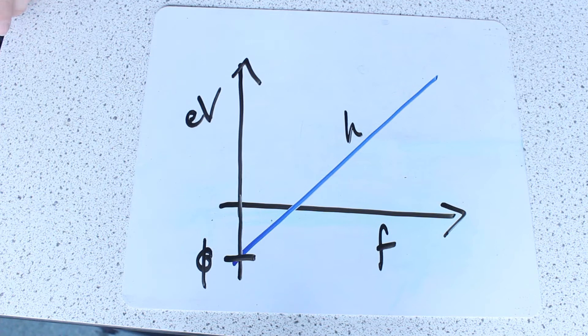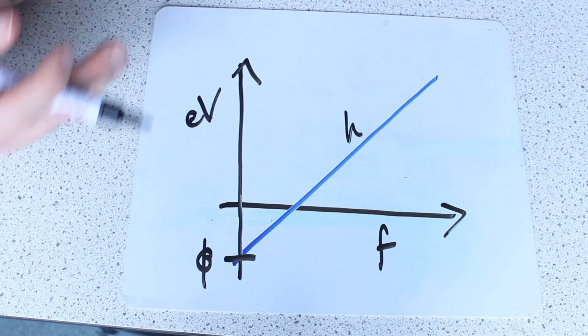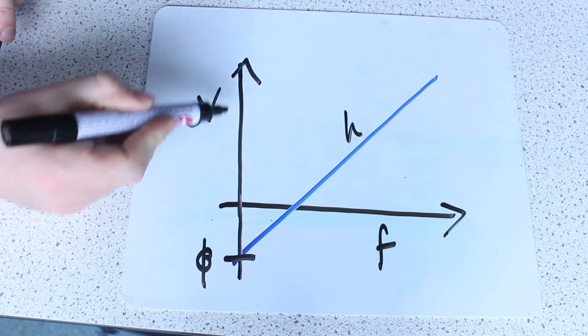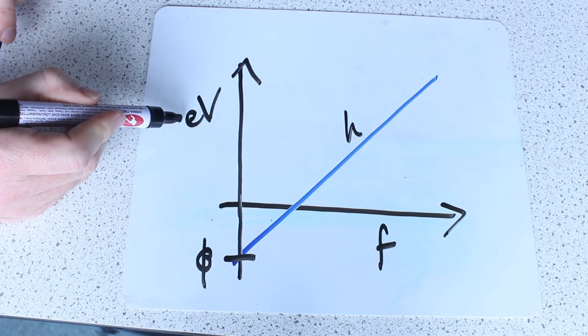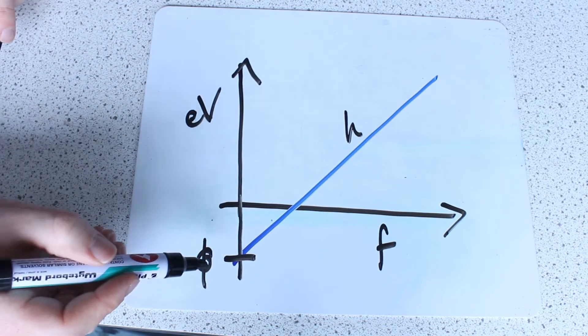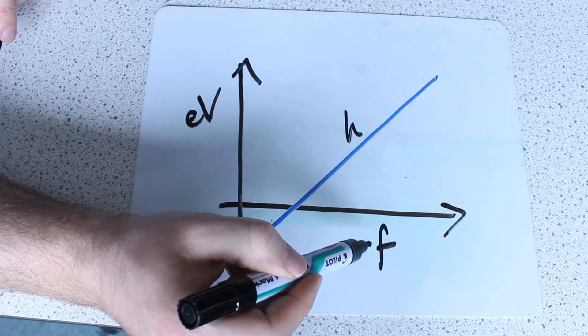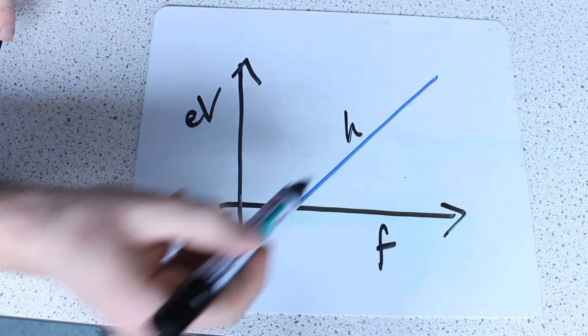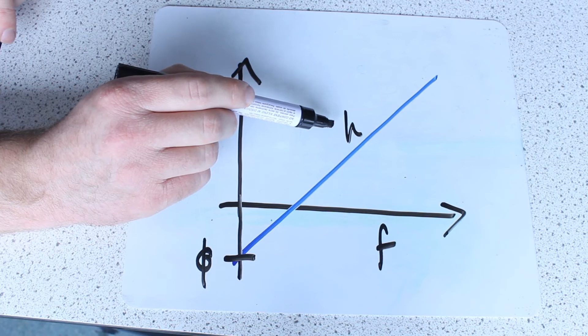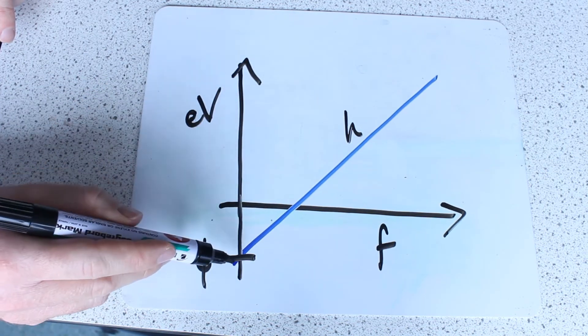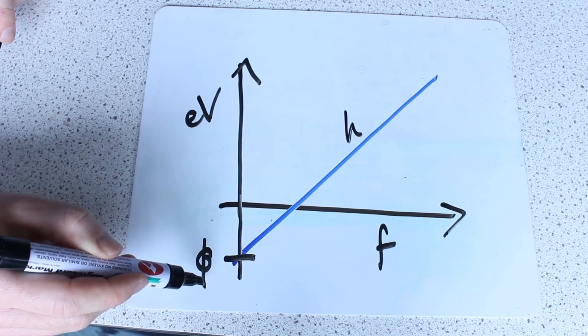So I asked Excel to plot me the graph, and the graph looks something like this. The stopping voltage multiplied by the charge on an electron, here on the Y axis. Frequency on the X axis. The gradient is now Planck's constant. And the last variable, the Y-intercept, is the work function, phi.